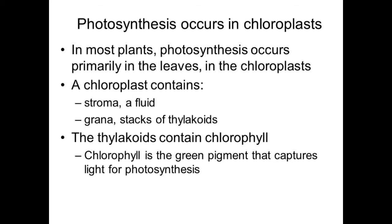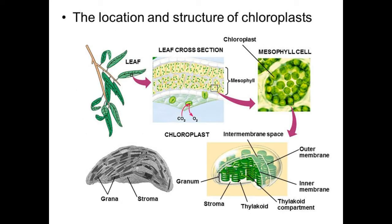The chloroplast contains stroma and grana, which are stacks of thylakoids. The thylakoids contain chlorophyll, which is a green pigment that ultimately captures light energy. This is the systematic representation and structure of chloroplast in the leaf.